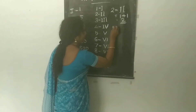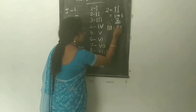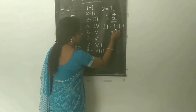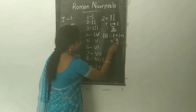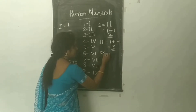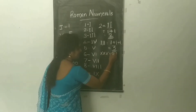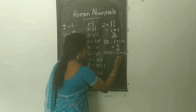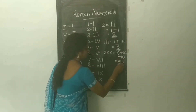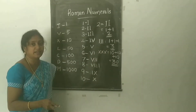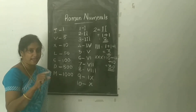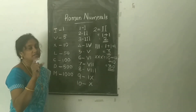If you write three I's, that is 1 plus 1 plus 1, which equals 3. Similarly, XXX equals 10 plus 10 plus 10, which equals 30. So it is clear that if a symbol is repeated, its value is added as many times as it occurs.